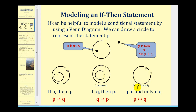And for the biconditional, P if-and-only-if-Q, remember that means if-P-then-Q is true, and if-Q-then-P is true. P and Q would actually be the same set, so if we're in P, we're also in Q.